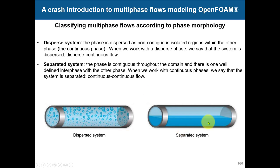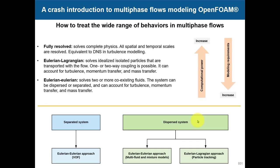Resolving a dispersed system is tricky; resolving a separated system is really easy because you have a clear interface to track and you just need to solve one set of equations. Generally speaking for interface modeling, you can take the fully resolved approach — verifying mesh resolution — but this is incredibly expensive and out of scope.